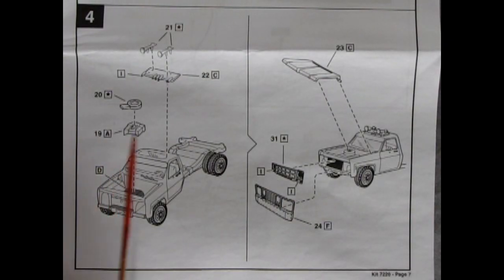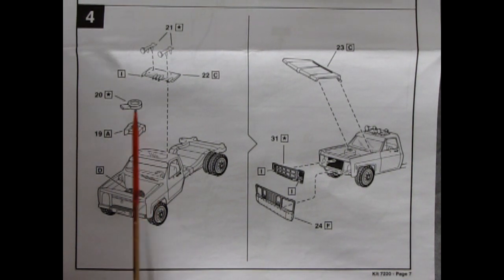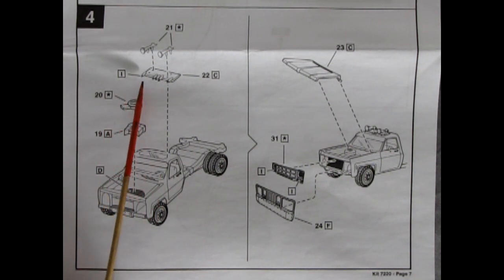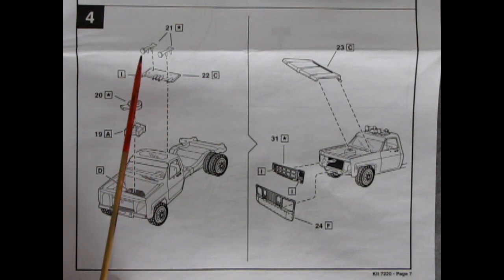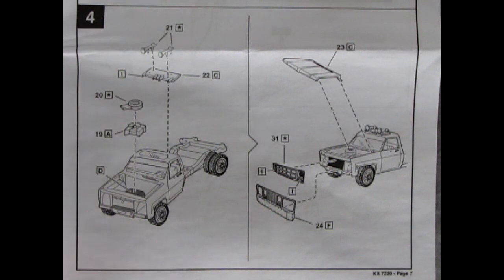Now panel four shows the rest of the cab going together and if you'll notice here is our engine upper as well as the air cleaner, and then we have the roof with all the lights and our horns. And then here we have our hood being dropped into place as well as the grille and this nice bumper with the overriders.